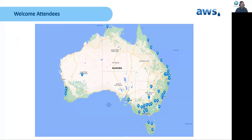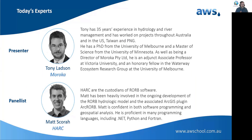We've got almost a thousand registered attendees, most of whom are local right here in Australia — all the capital cities covered and some other places as well. Welcome to those joining from overseas too. As a disclaimer, today we're talking about the Australian rainfall and runoff guidelines, Australian temporal patterns, intensity-frequency-duration data, and so on. RORB is one of the rainfall runoff modeling options you might have among many, but if you're going to be in the water space in Australia, you absolutely need to know what RORB does.